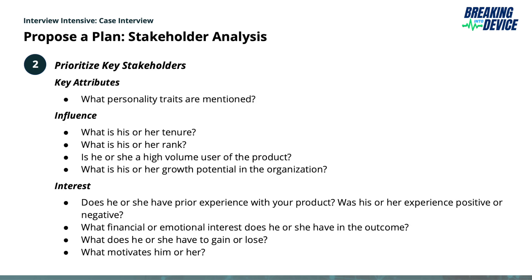The next step is prioritizing these key stakeholders, and this is going to require a little bit more legwork. You're going to want to identify what key personality traits are mentioned. Next, look at the influence that these individuals have over the organization. Things you'll be able to pick up on include: what is his or her tenure, what is his or her rank, is he or she a high-volume user of the product, and what is their growth potential in the organization.